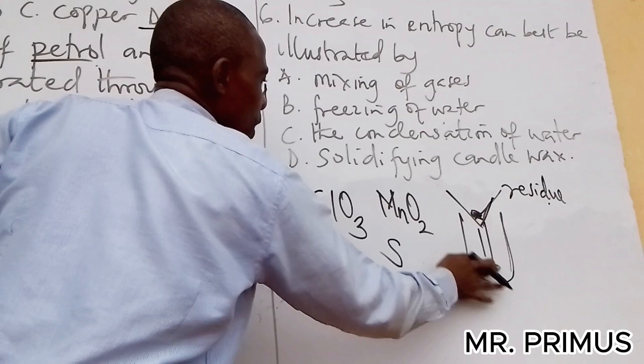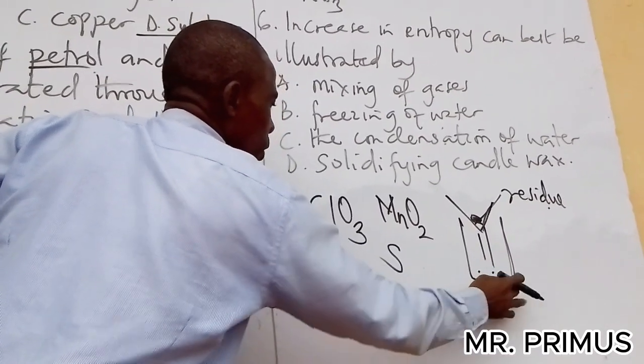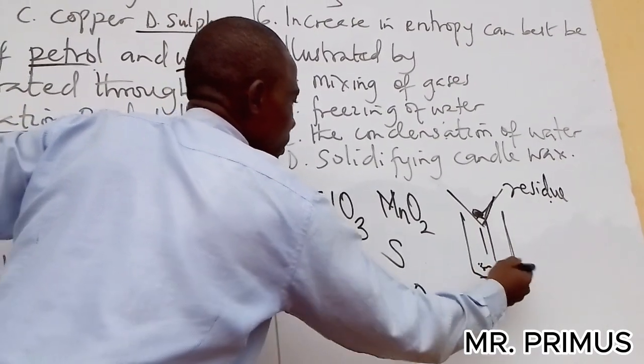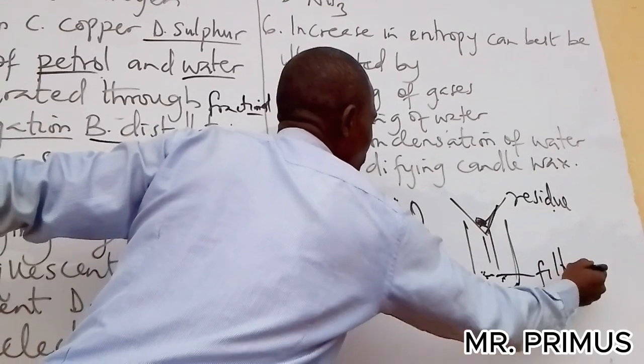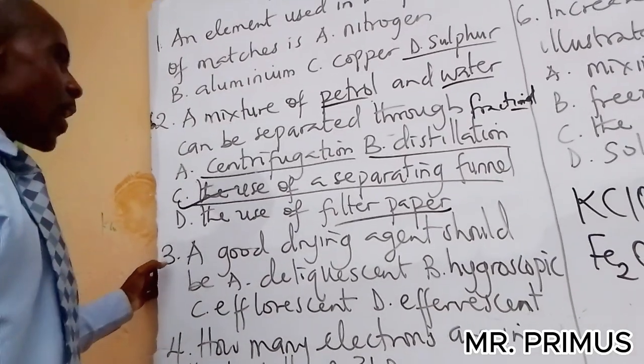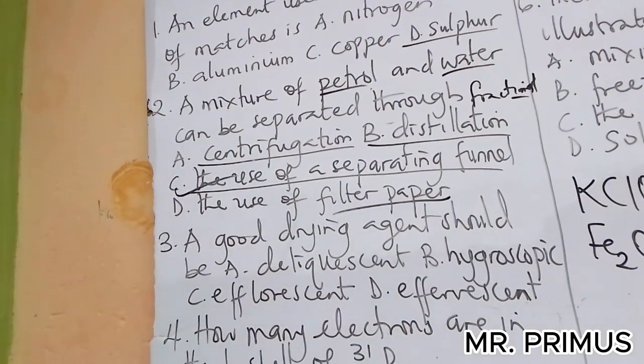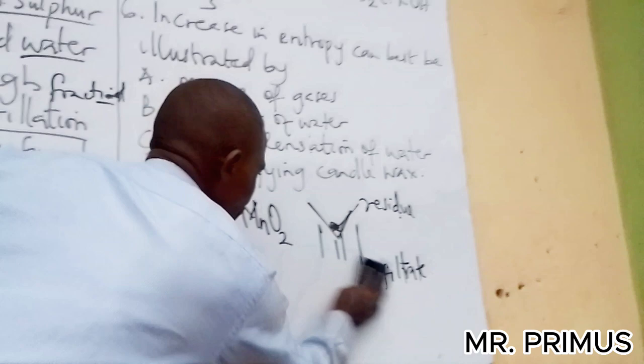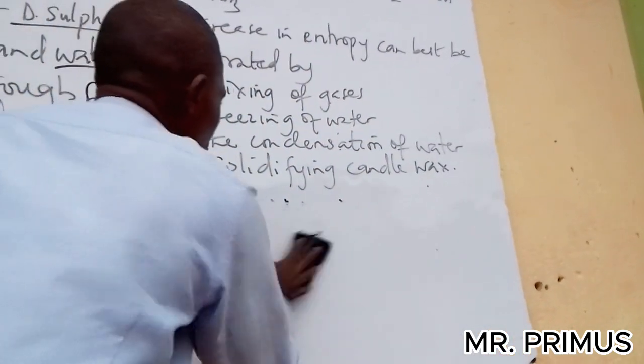When you filter here, what you have here is called residue. So the solid after filtration that remains on the filter paper is residue. Then the liquid component, this thing that remains here is called filtrate. Residue, filtrate. Let me clean the board very quickly because we're using this piece.